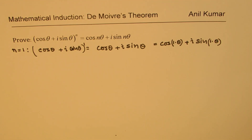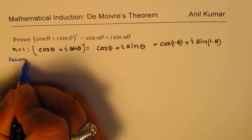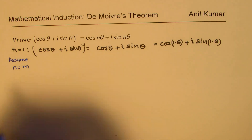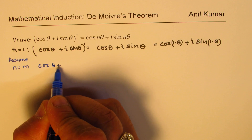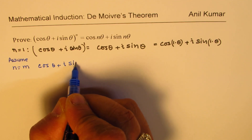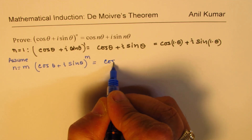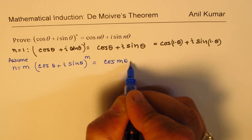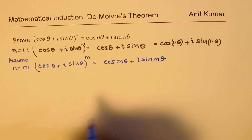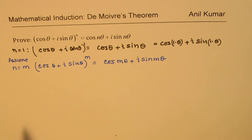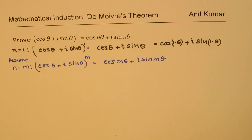Now let us assume that it works for n = m. In that case, we have (cos θ + i sin θ)^m = cos(mθ) + i sin(mθ). So if n = m, using this particular formula, we get that result.